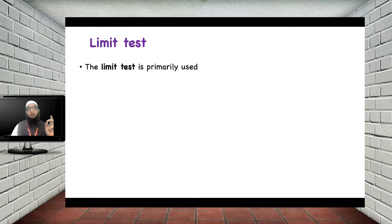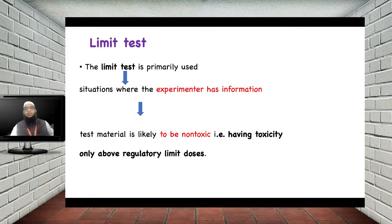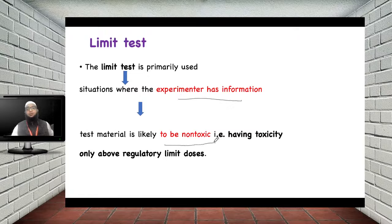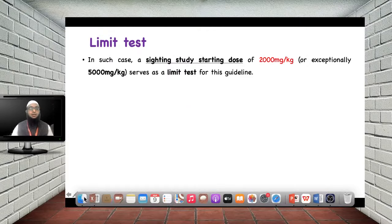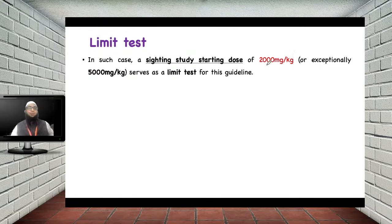The limit test is used when the experimenter has information indicating that the test material is likely to be non-toxic and shows toxicity only above a regulatory limit. In such cases, instead of starting from a low dose, you go directly to 2000 mg/kg. If no death or only one death occurs in the three animals, the drug can be classified as relatively safe.